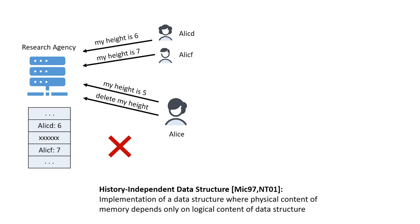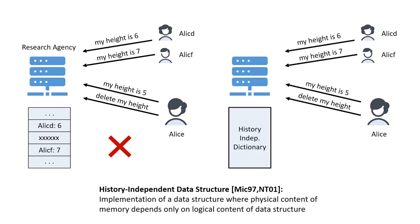History-independent implementations of data structures have the property that the physical content of memory depends only on the logical content of the abstract data structure. So if the agency were to maintain this mapping between names and heights using a history-independent dictionary, then Alice inserting herself and deleting herself would look the same in memory as Alice never having inserted at all, and this immediately satisfies deletion compliance — in fact, it is perfectly deletion compliant.